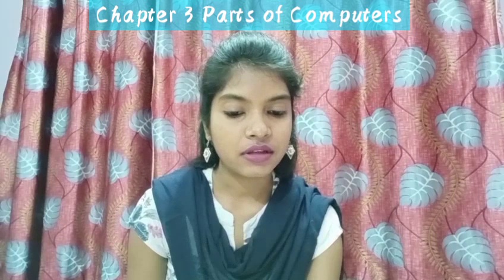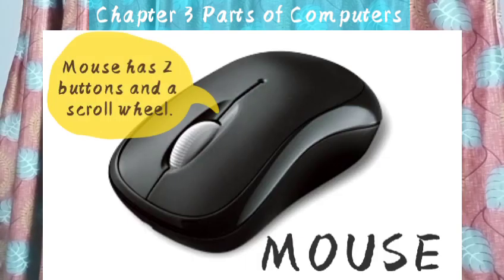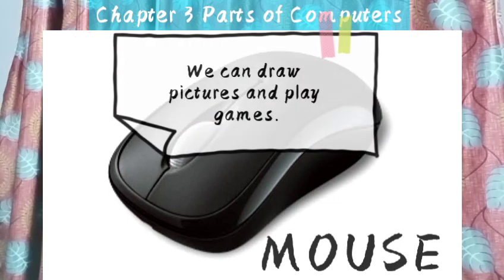Mouse. A mouse has two buttons and a scroll wheel. We can point and select using the mouse. We can draw pictures and play games with the help of the mouse.